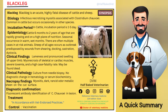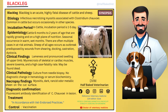Let's discuss a quick summary of black leg disease in animals. It is an acute, highly fatal disease of cattle and sheep. The etiology of the disease is infectious necrotizing myositis associated with Clostridium chauvoei, common in cattle but occurring occasionally in other species.